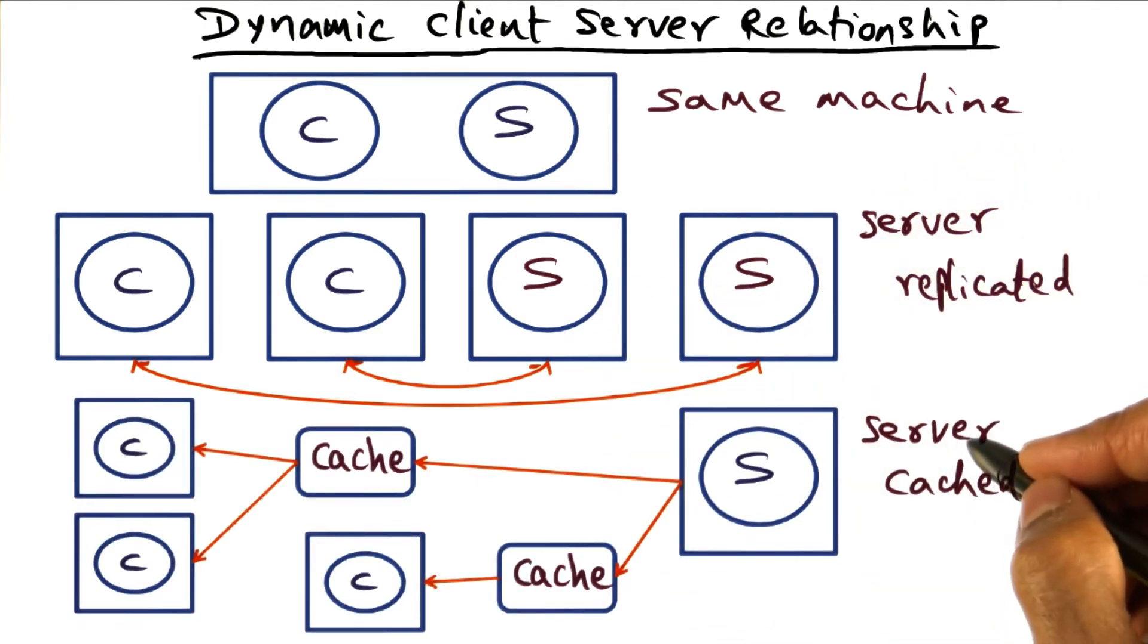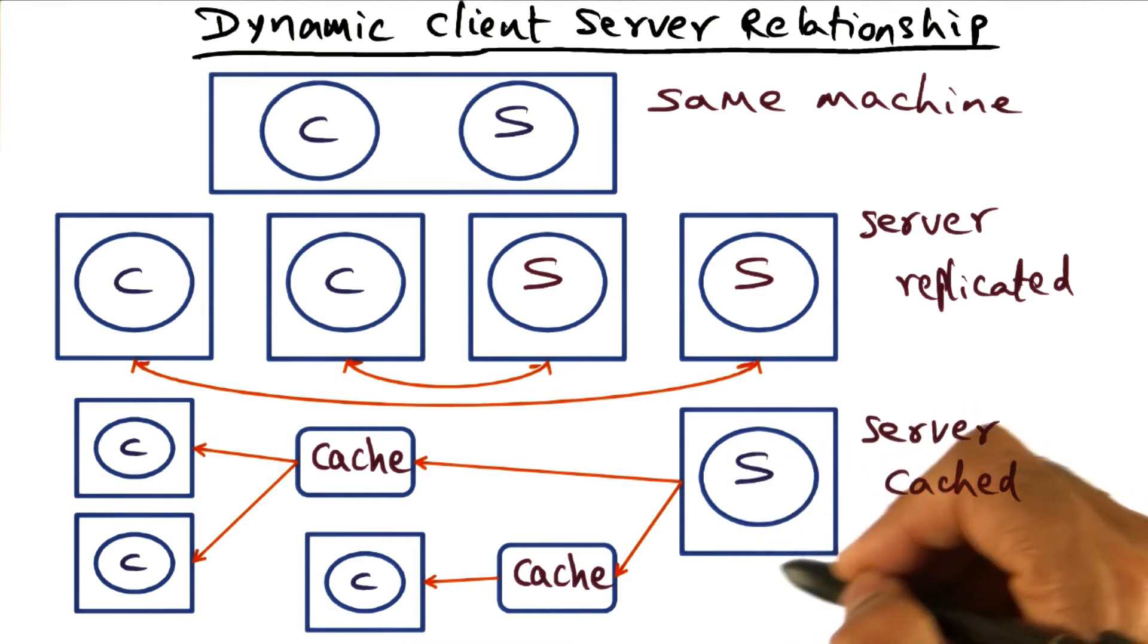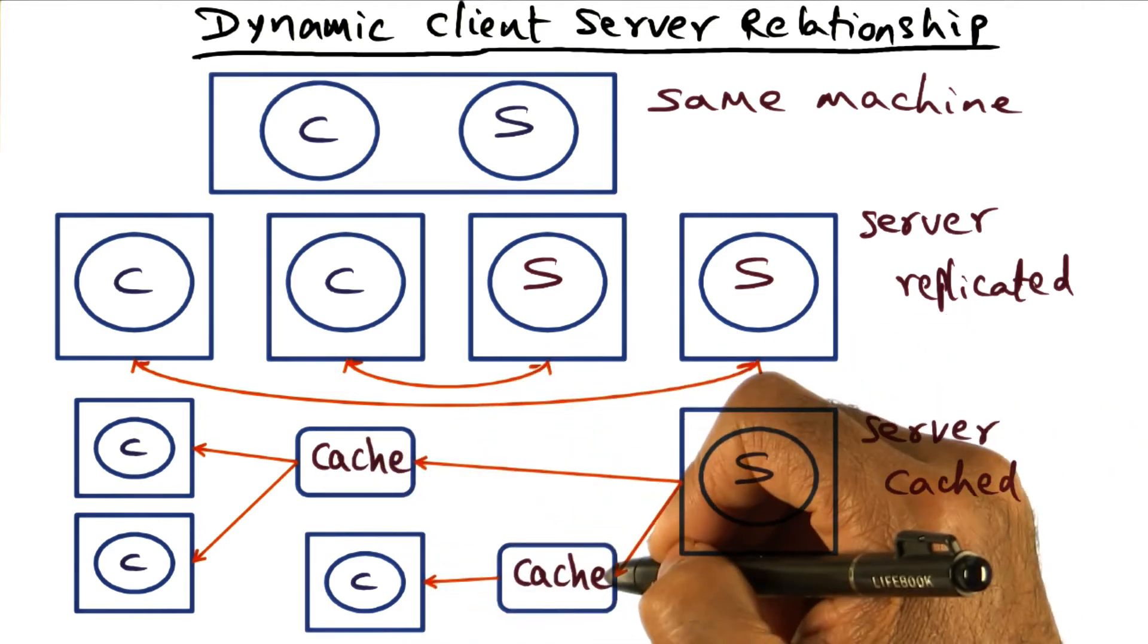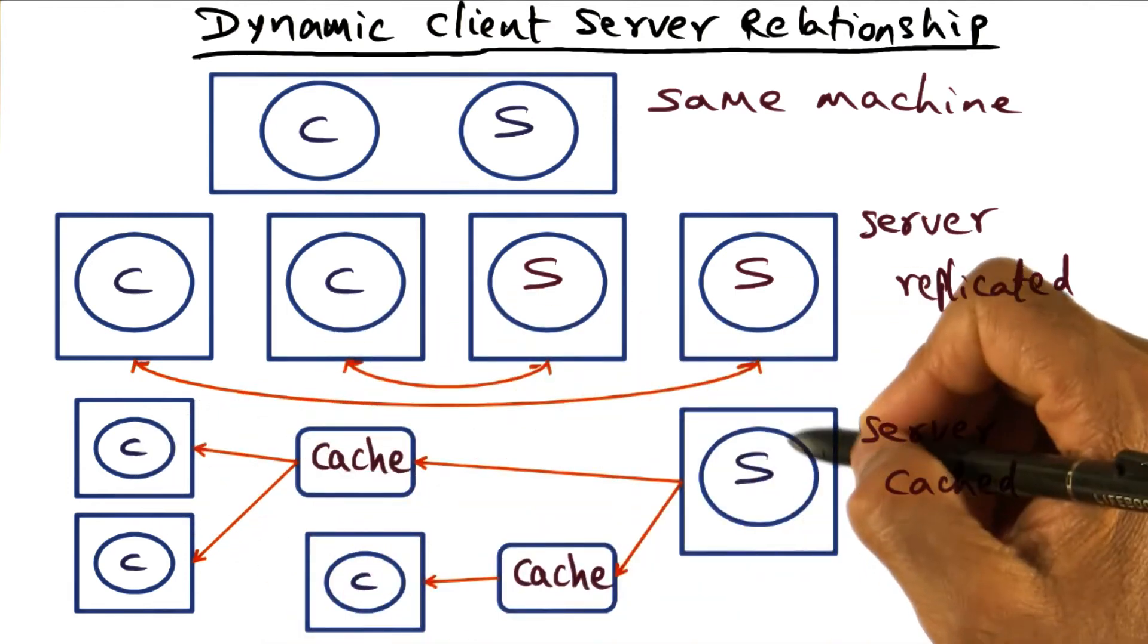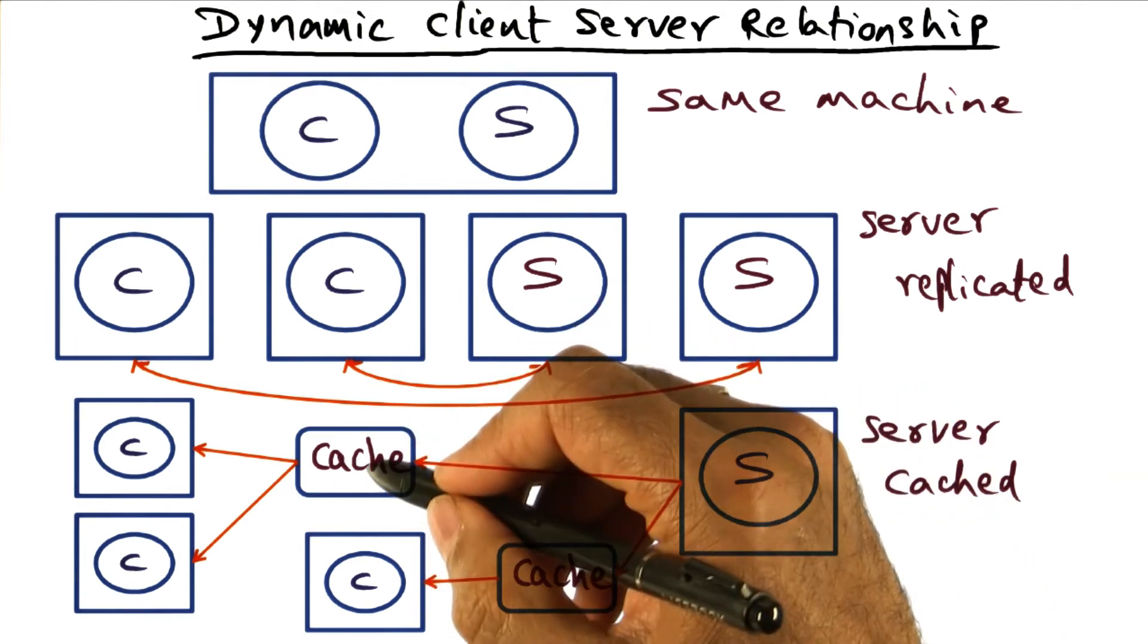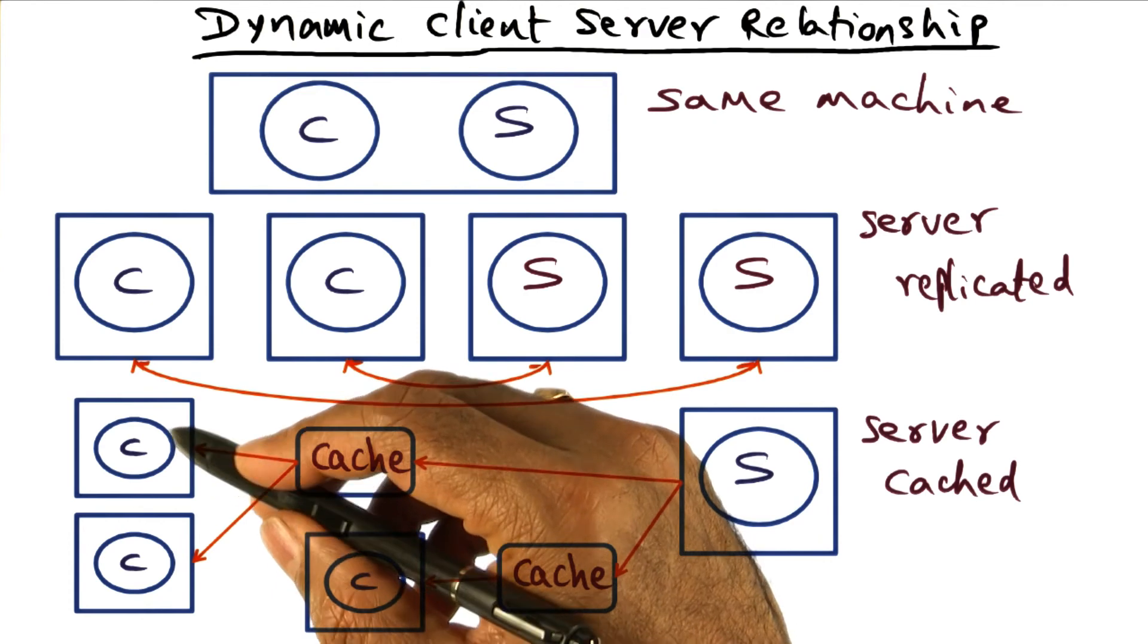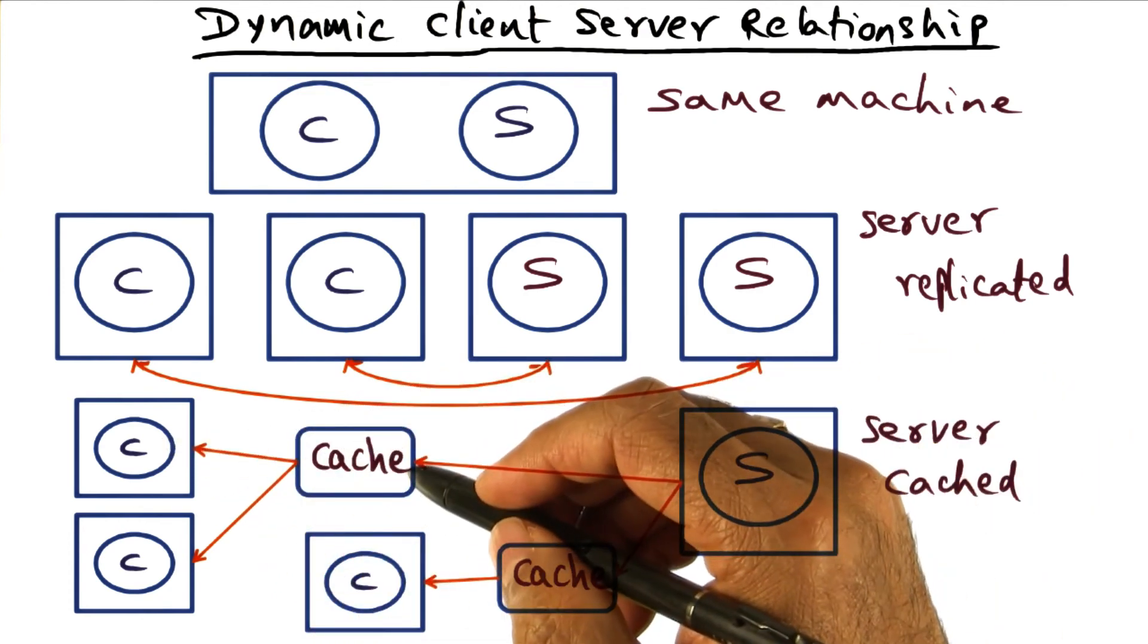Another variation of the same theme is where the server is not replicated, but the server is cached. For instance, if it's a web server, then there could be a proxy for the web server that is cached. And in that case, the client request need not go to the origin web server, but it can go to the cached copies that are available. And so here again, this decision of routing a client request to a particular cached copy of the server is dynamically taken.